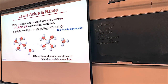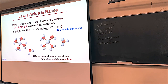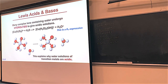We left off on Friday talking about Lewis acids and bases, and I want to look at this slide one more time. Lewis acid and Lewis base is different from a Bronsted acid and Bronsted base. The Bronsted acid and base is what chemists use most of the time — hydrogen donors are Bronsted acids, hydrogen acceptors are Bronsted bases. That works really well for pH and all that.